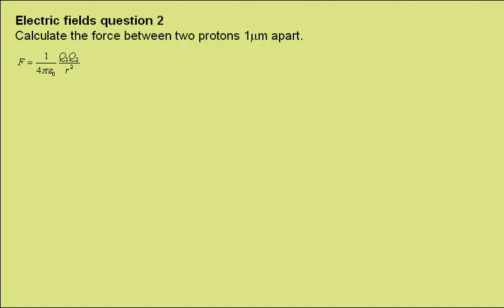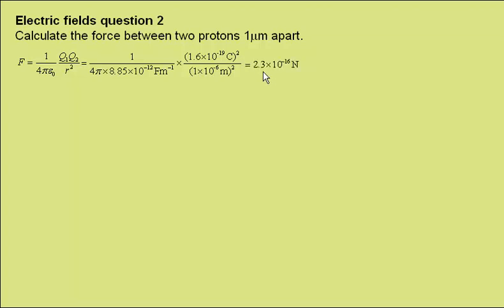For this we need Coulomb's equation, and putting in the values, the charge on the proton is 1.6 times 10 to the minus 19 Coulombs. As we're multiplying it by the charge on another proton, we can just square the term here, and this gives a force of 2.3 times 10 to the minus 16 Newtons.